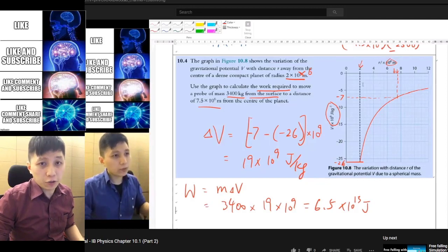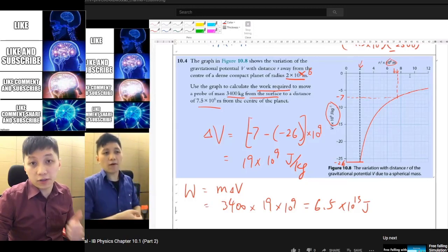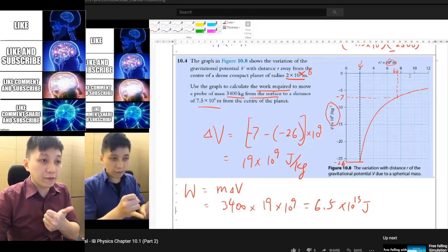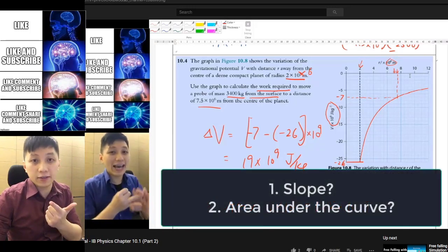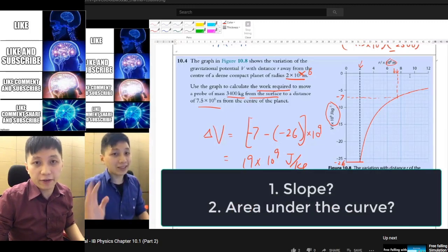Hi, previously I asked you a question. The question is for a graph of gravitational potential against the distance, what is the physical meaning of the slope and also what is the physical meaning of the area under the curve? So if you haven't thought about that yet please pause the video now and think about it.